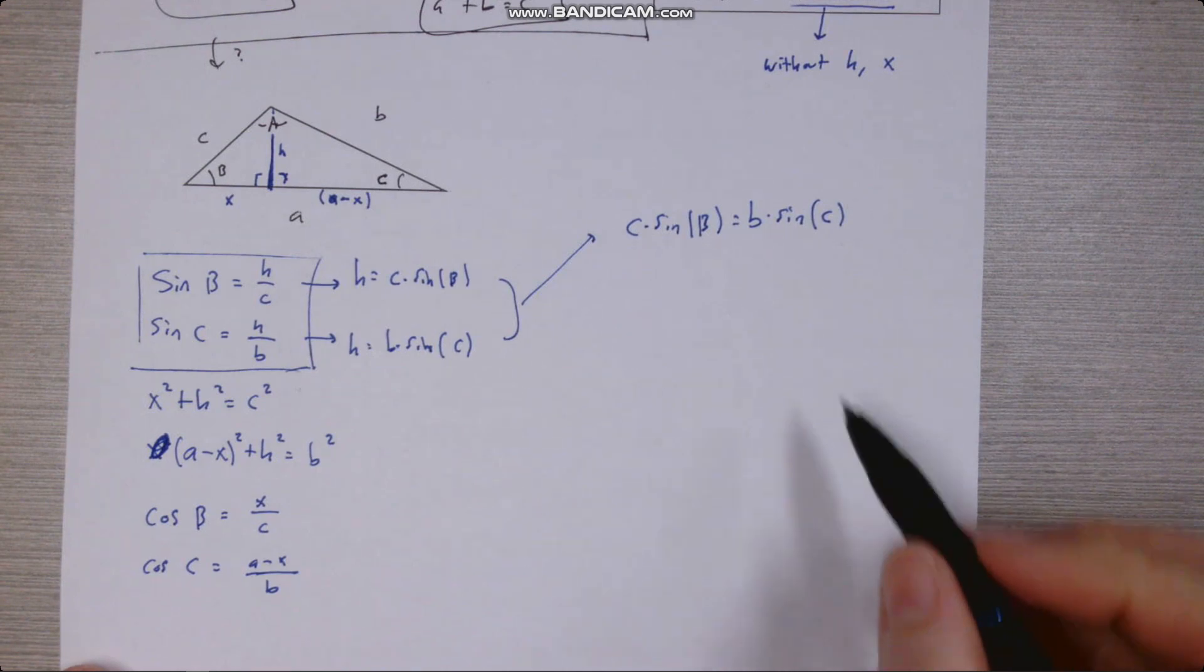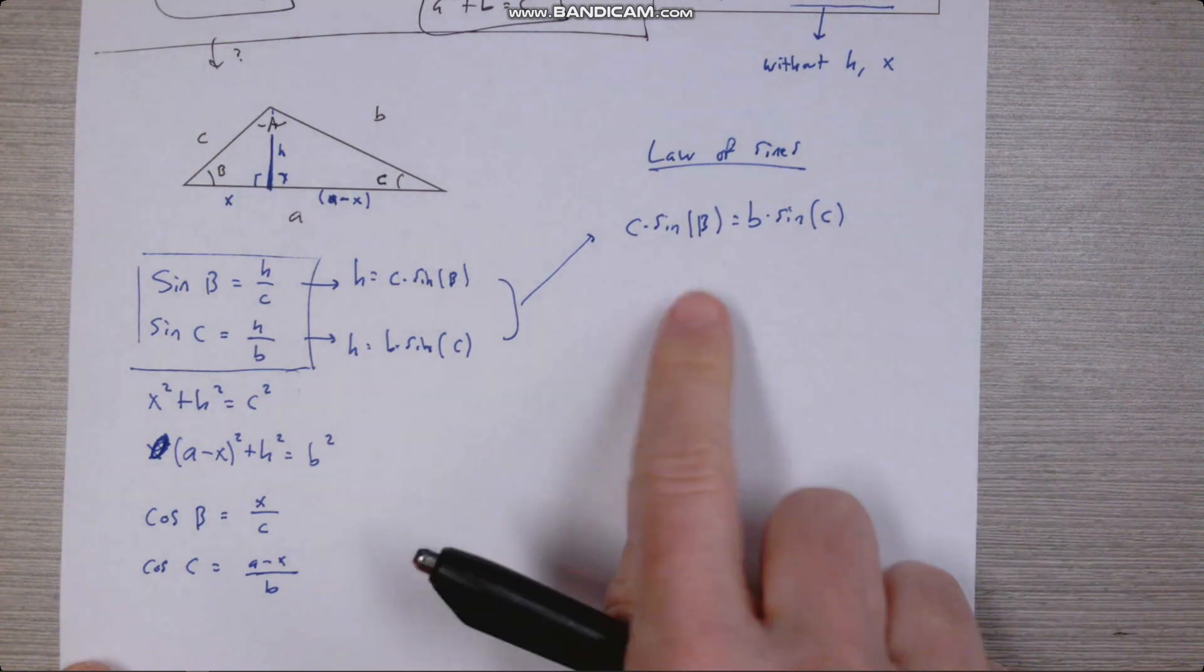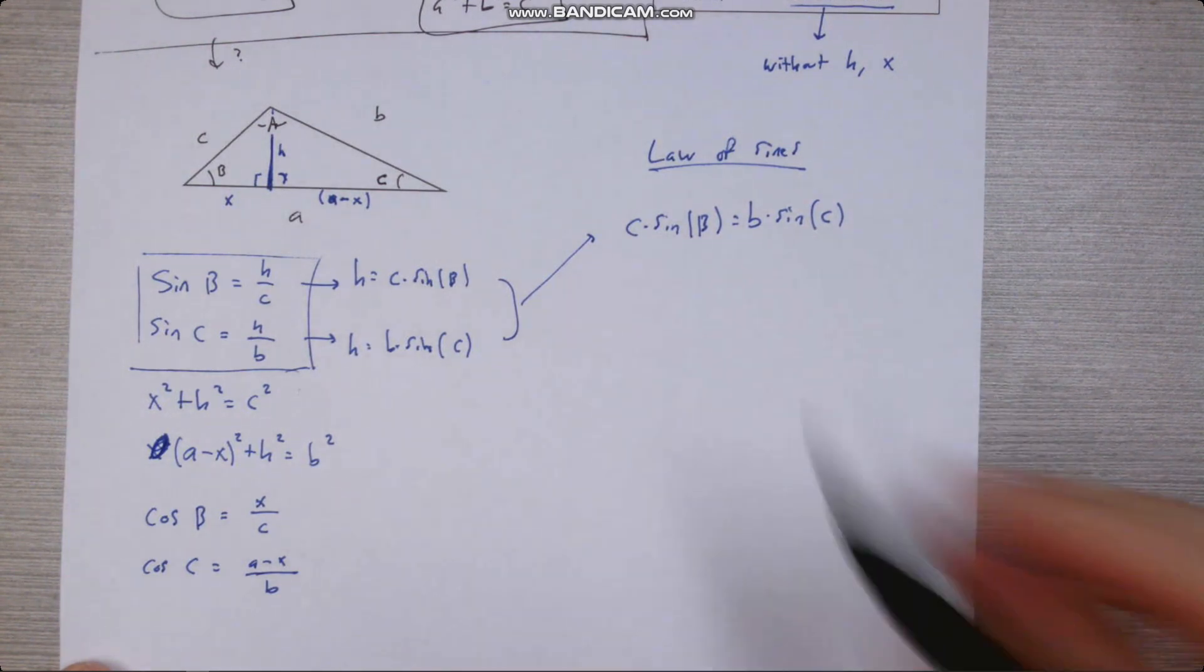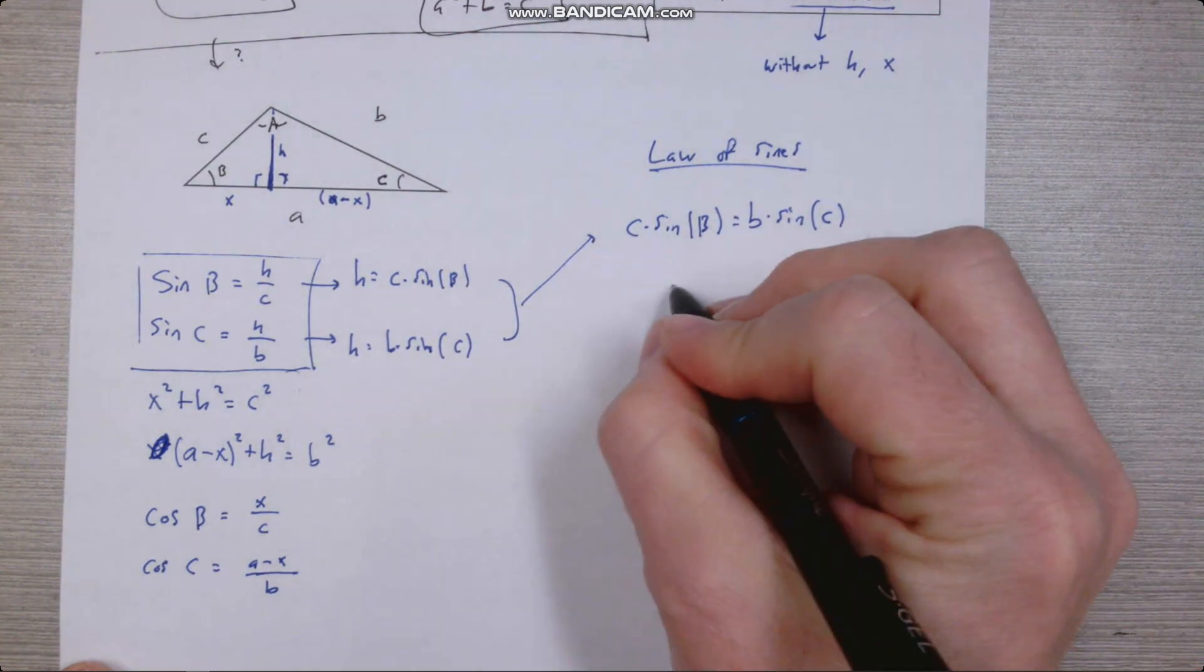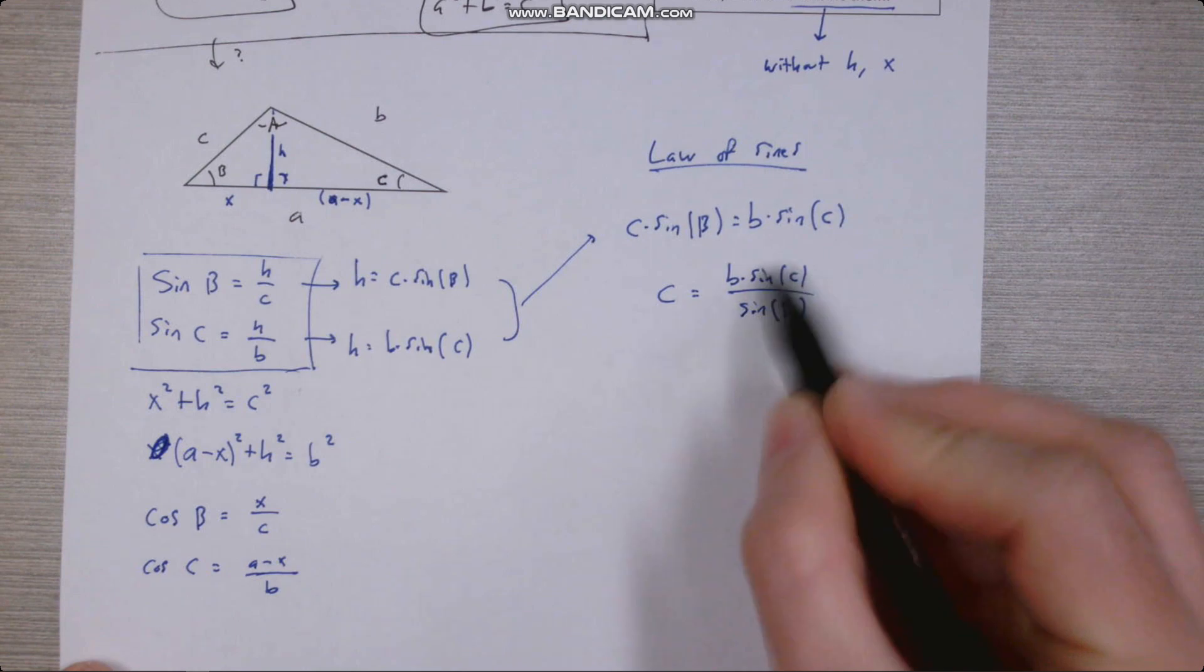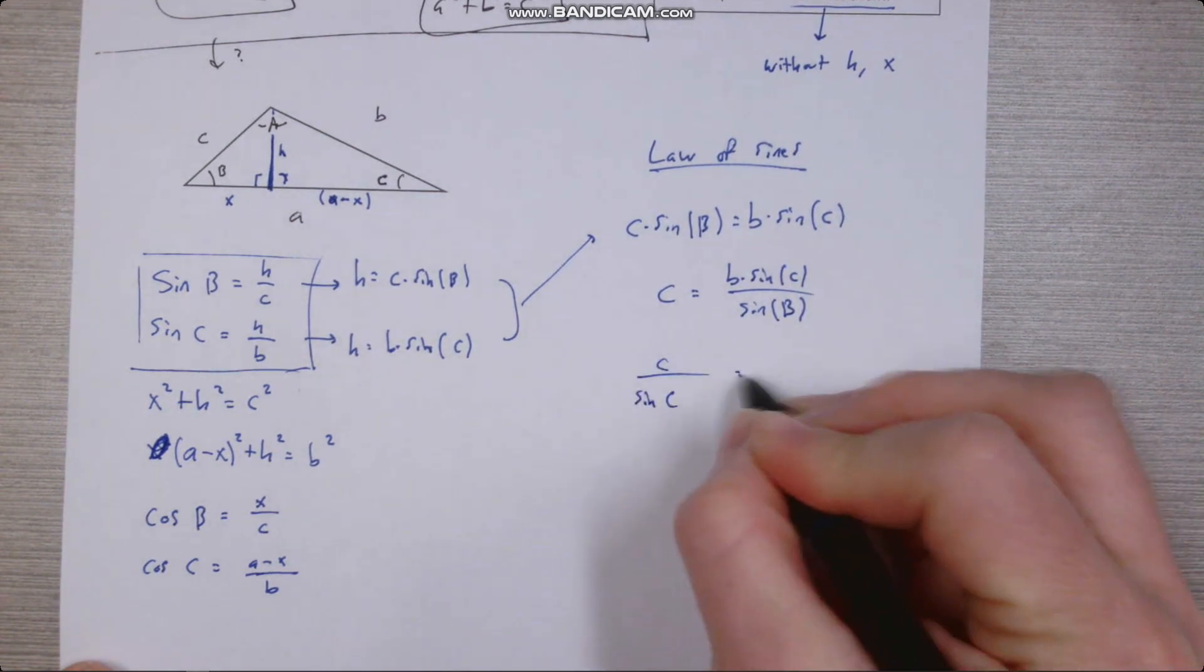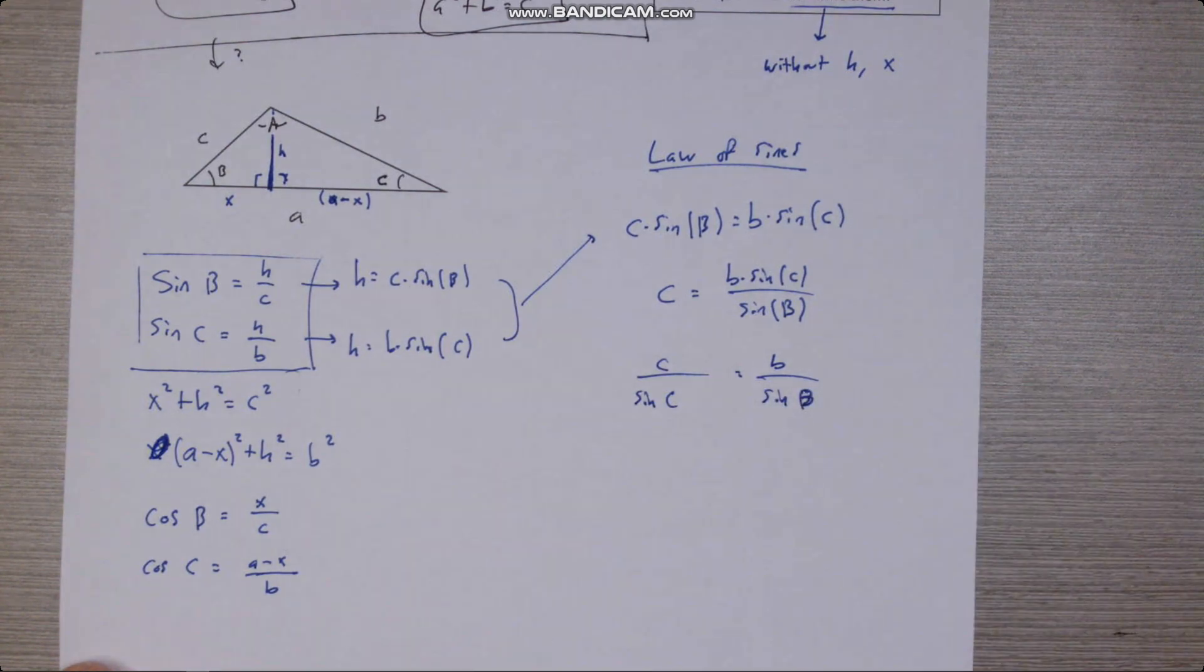If this doesn't look familiar to you, this is a slightly different form of a famous thing called the law of sines. The conventional form for the law of sines, we'd get by dividing by the sine of B and the sine of C on both sides. So if we divide by sine of B on both sides, we've got C equals B sine C over sine B. Then if we divide by sine C on both sides, we've got C over sine C equals B over sine B. And that also has a very nice symmetry to it.